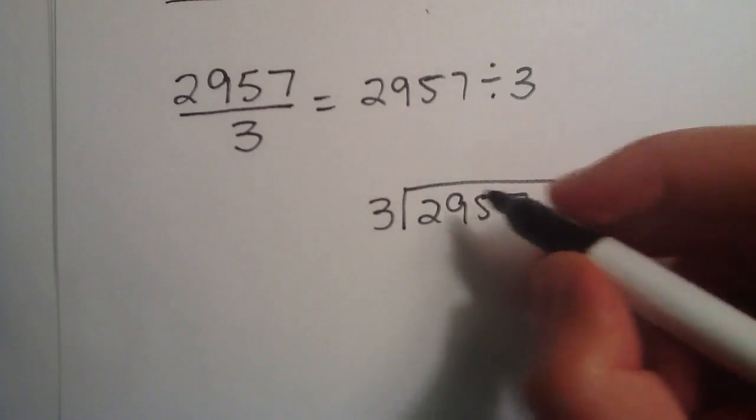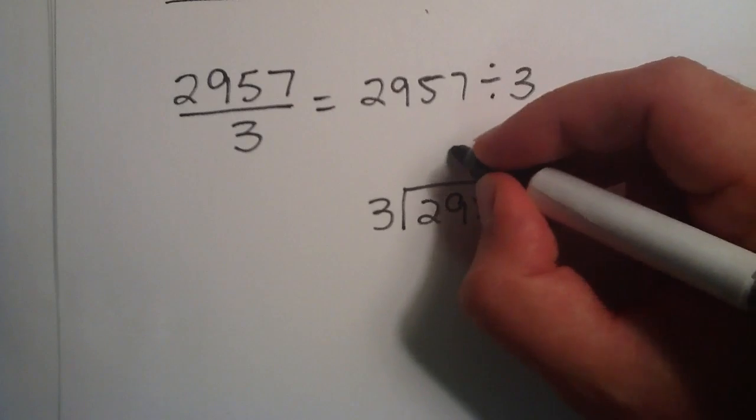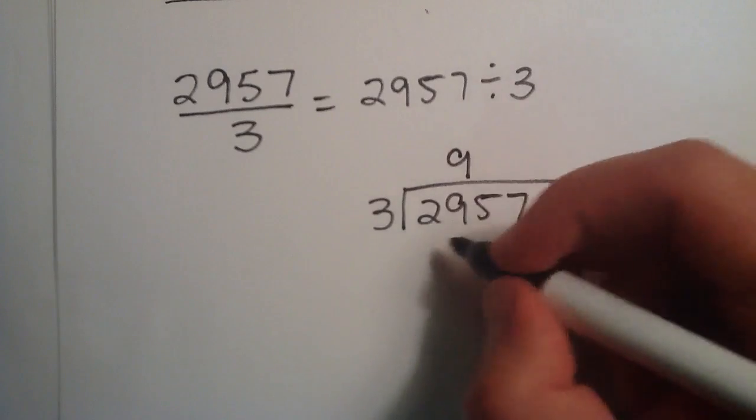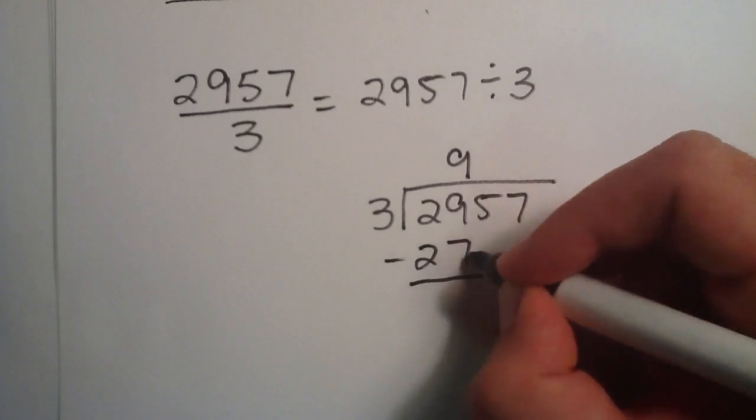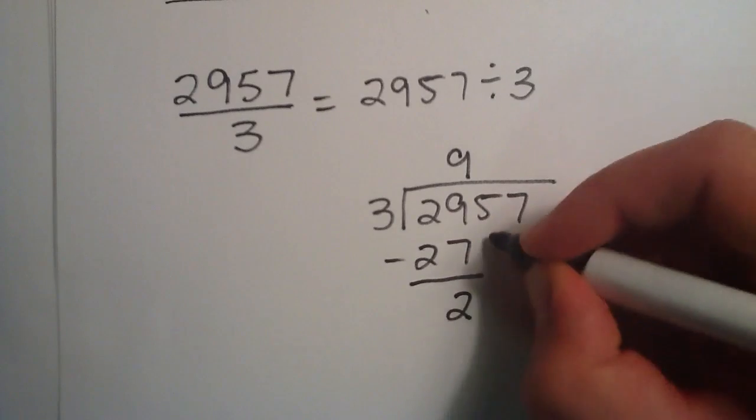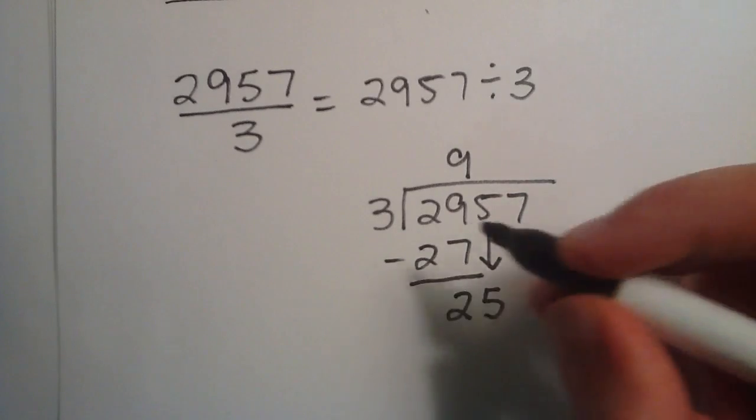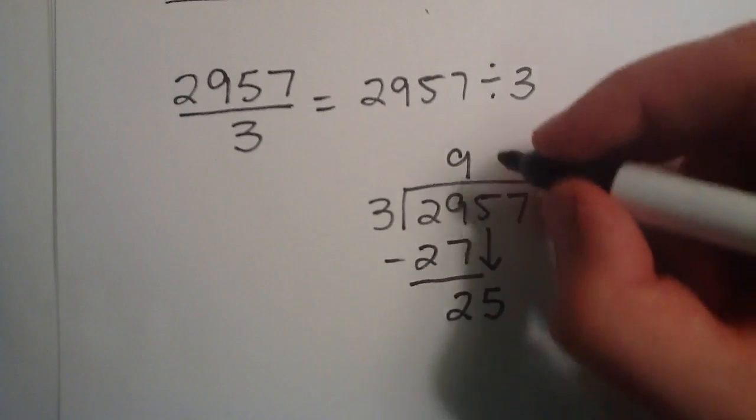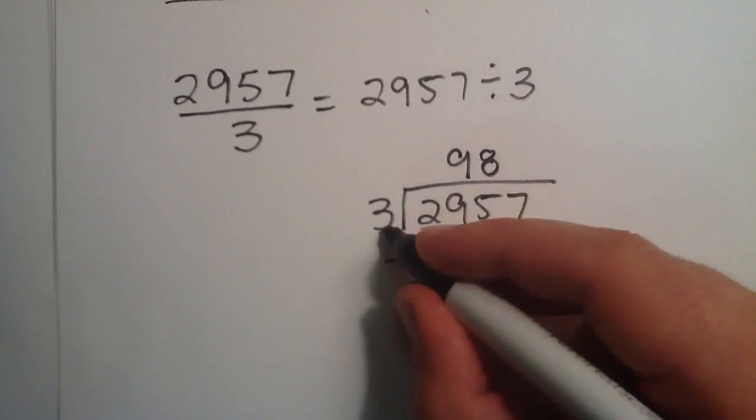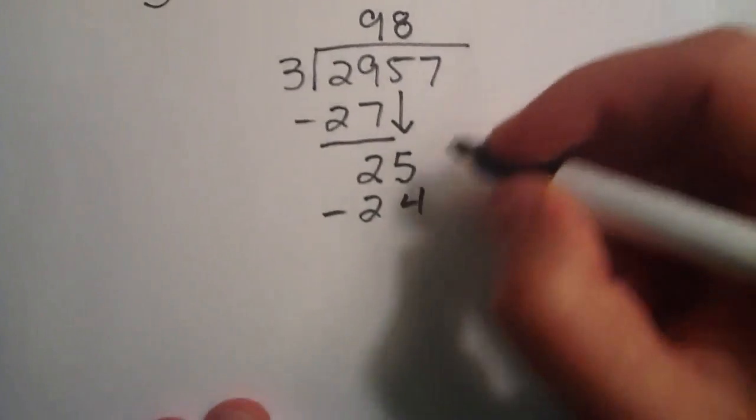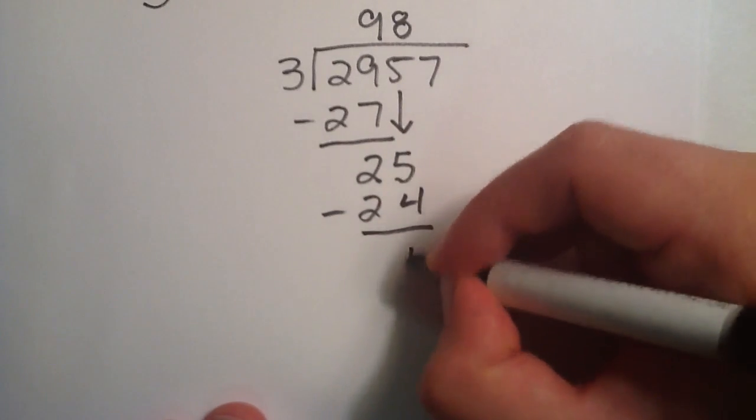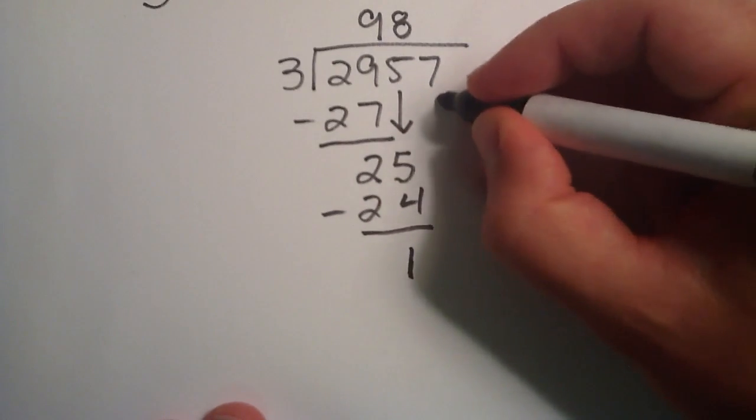Now 3 doesn't go into 2, but 3 goes into 29 nine times. 3 times 9 is 27. 29 minus 27 is 2. We bring our 5 down. And 3 goes into 25 eight times. 3 times 8 is 24. We take away 24 from 25. We're left with 1. Bring our 7 down.